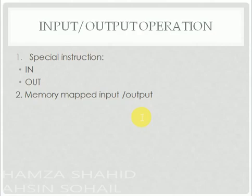Now we will talk about the operations. Input output operations are done in two different ways. Number one is special instructions. In special instructions we have two instructions: IN and OUT. They have special locations. When a microprocessor wants to read a key, it uses the IN instruction.